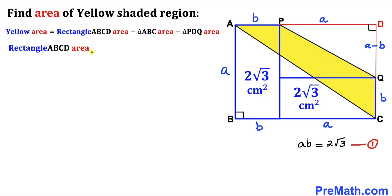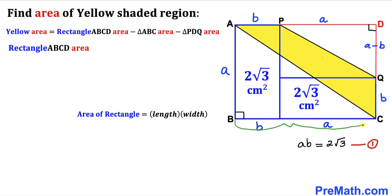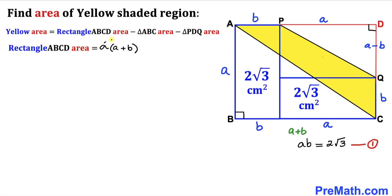Now let's calculate the area of the big rectangle ABCD. Recall that the area of a rectangle equals length times width. The length of rectangle ABCD is the combined length A plus B, and the width is simply A. So therefore the area of rectangle ABCD is A times (A plus B). Distributing gives us A squared plus A times B.